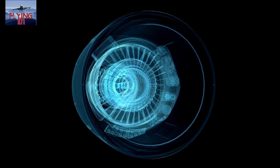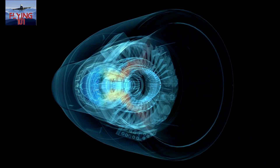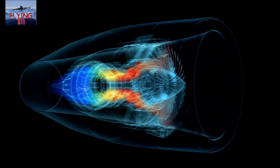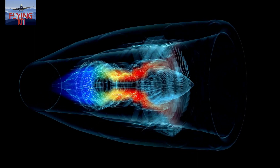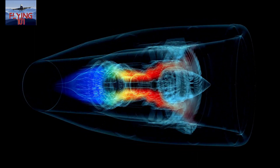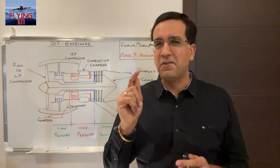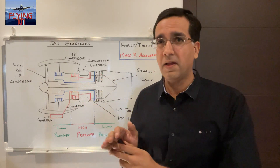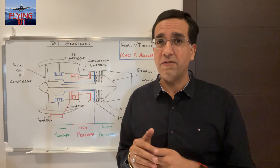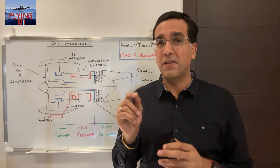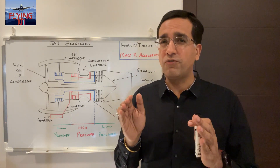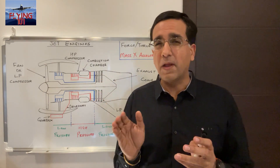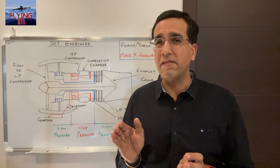The turbojet is a heat engine where the higher the temperature retained in the combustion, the greater the expansion of the gases and hence the greater the efficiency of the engine. But there is a limit to the amount of heat that can be released into the turbine section, and this limit is imposed by the materials from which parts of the engine — specifically the turbine blades and guided vanes — are manufactured.